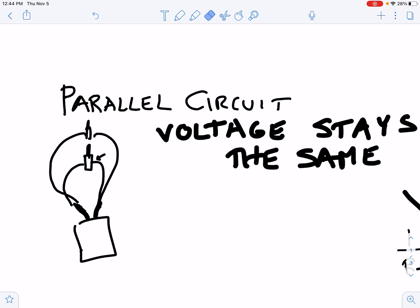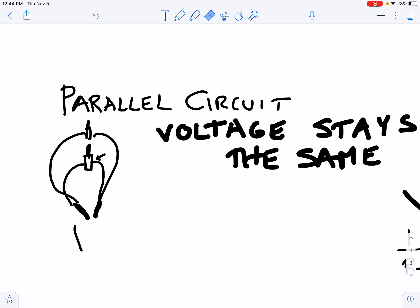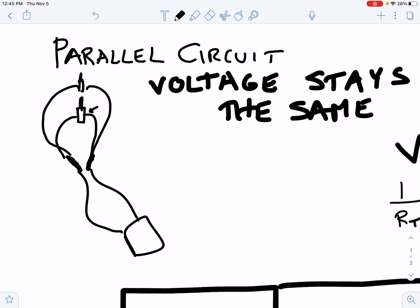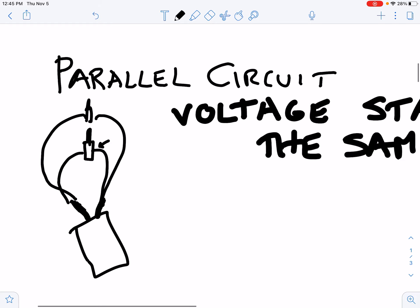If we just had a single light connected to the battery, it would be really, really bright — you've done that in class. But if you put on a second one, basically both those lights are connected to the battery. Even with a wire here and a wire here connected to the battery, both are still connected to it. In a parallel circuit, all the lights in parallel all have access to the same battery.